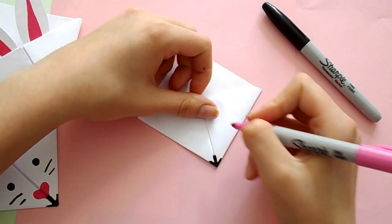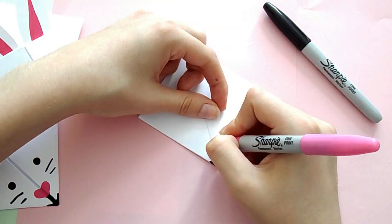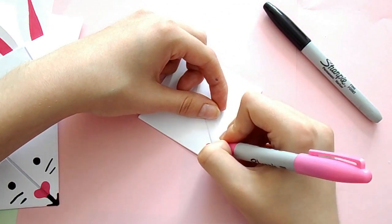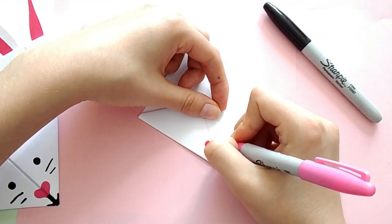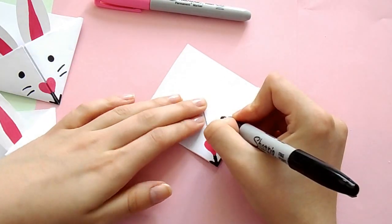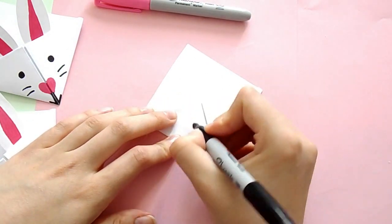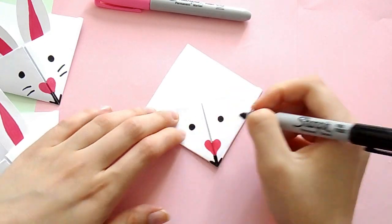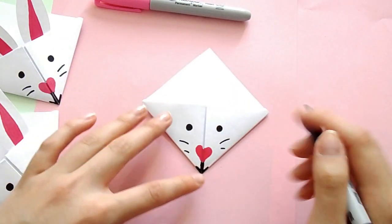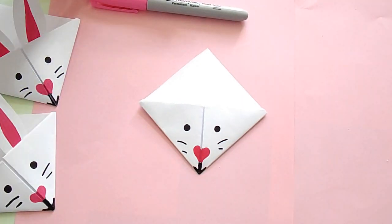Then take the pink pen and draw on a heart nose on top of the line. And then take the black pen again and draw on two eyes, and then lastly we're going to draw on two whiskers on either side of the nose. Mine were really wonky, but that's okay, it doesn't matter.